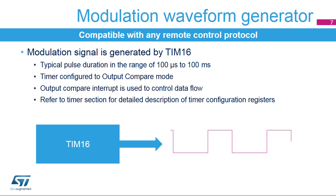Timer 16 generates the modulation waveform for the remote control protocol used in the application. The timer is configured in output compare mode, using the output compare interrupt to generate pulses representing a logical 0 or 1 and control the modulation of the data flow. For a detailed description of how to configure timer 16, please refer to the timer section in the reference manual.